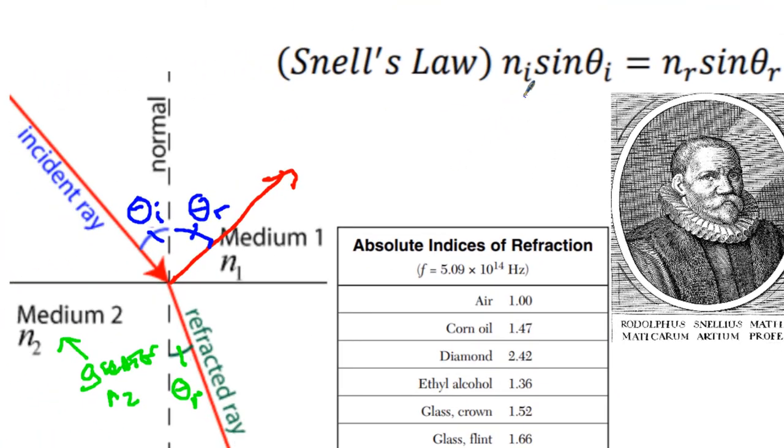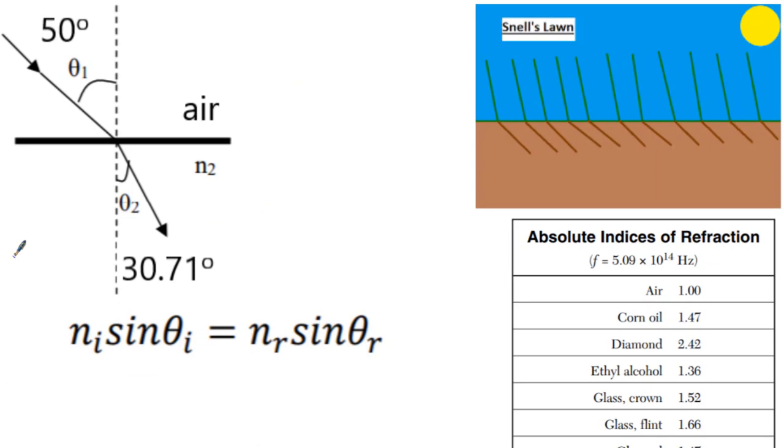It is NI, that's the index of refraction of the incidence ray, that's medium 1, times sine of the angle of incidence is equal to NR, that's the second medium, sine of theta R, which is the angle of refraction. So I'm going to show you a few problems to help you to be able to go through your self-assessment and be able to learn Snell's Law.